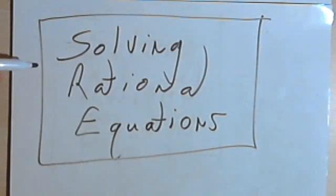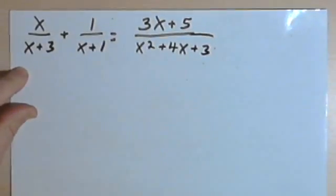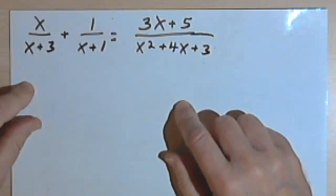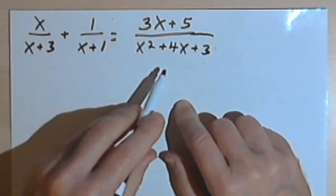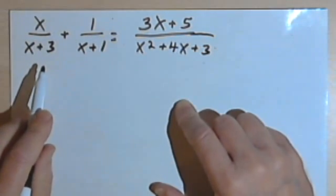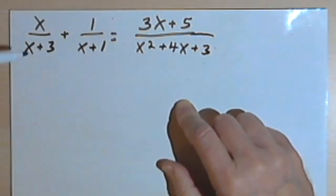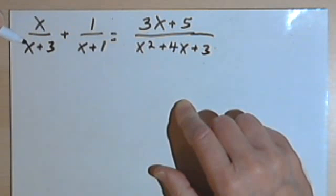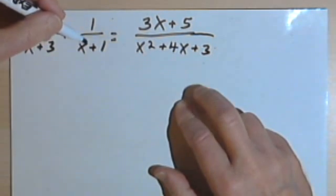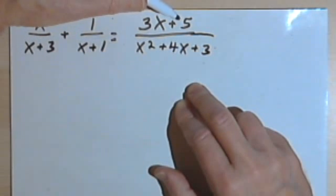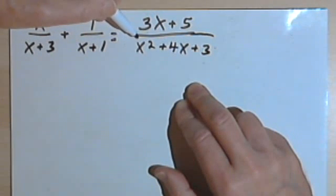This video is going to be about solving rational equations. Here I've got an equation with a bunch of x's in it, and you notice there are variables in the denominators — that makes these rational equations. What I'm starting out with is x over x plus 3, plus 1 over x plus 1, and that equals 3x plus 5 over x squared plus 4x plus 3.